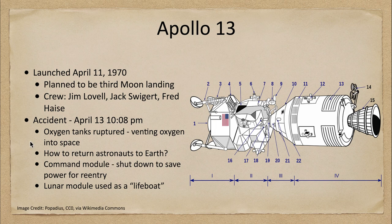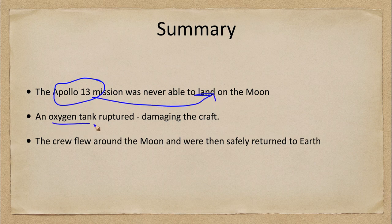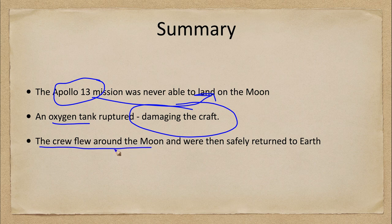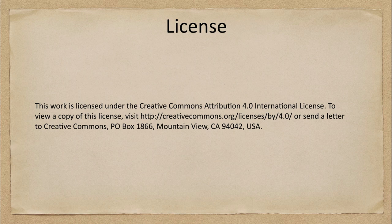To summarize: the Apollo 13 mission was the one that was not able to land on the moon. There was a rupture in an oxygen tank that caused damage to the command module, and the crew used the lunar module as a lifeboat, flew around the moon, and were then safely returned to earth. That concludes this lecture on the Apollo 13 mission. We'll be back next time for another topic in exploration of the solar system — have a great day everyone, and I will see you in class.